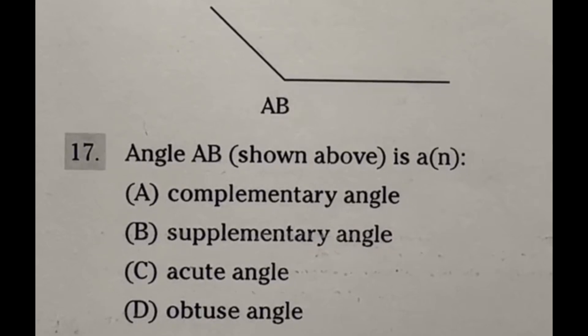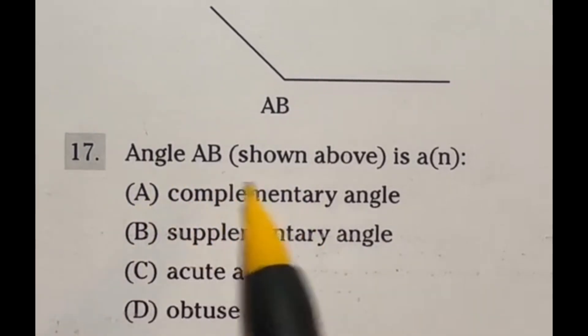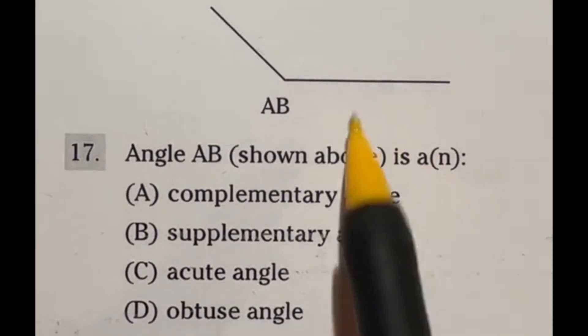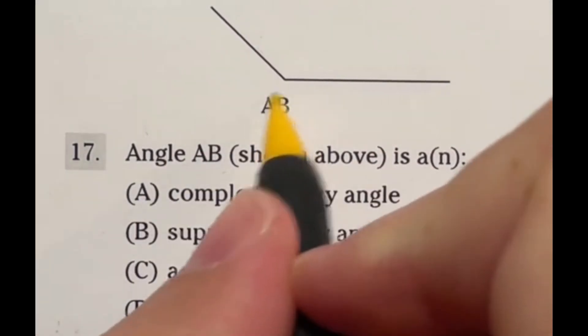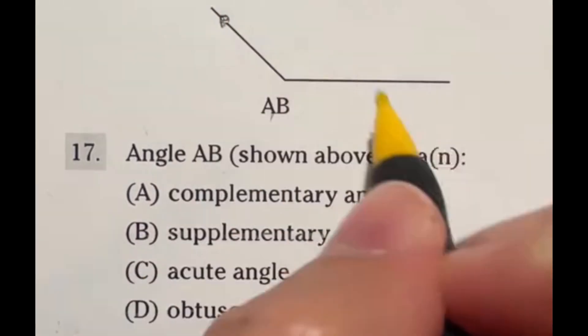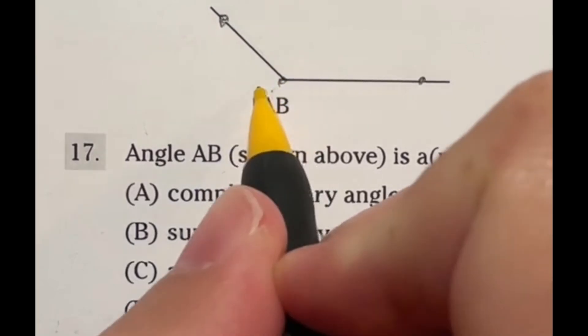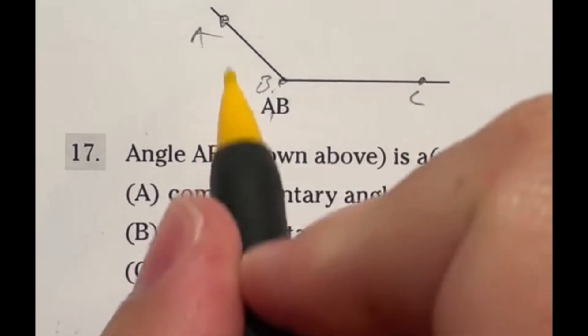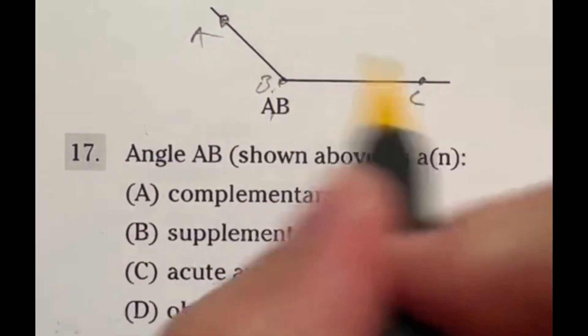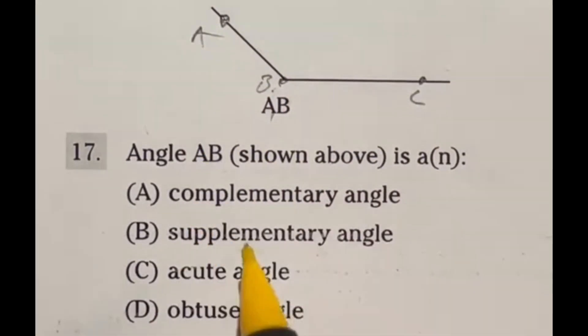I feel like I got a lot to say about number 17 here, just because it's kind of silly how it's labeled. It says angle AB shown above is what, and gives you different types of angles. Here's the deal I don't like about it is angle AB is silly. Usually when you name an angle, you label what this guy is right here. So let's just say this is B, then we have A and C. You would label this angle A, B, C, so you know that's what you're looking at here. That's silly, but whatever. Let's move on from there. Let's talk about what these definitions mean.